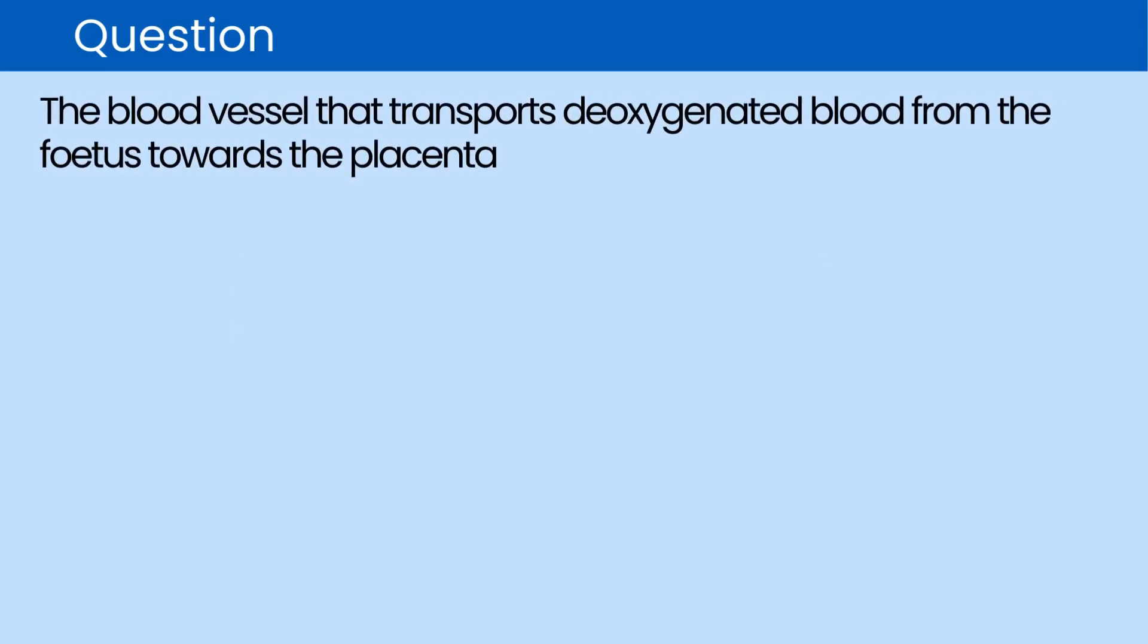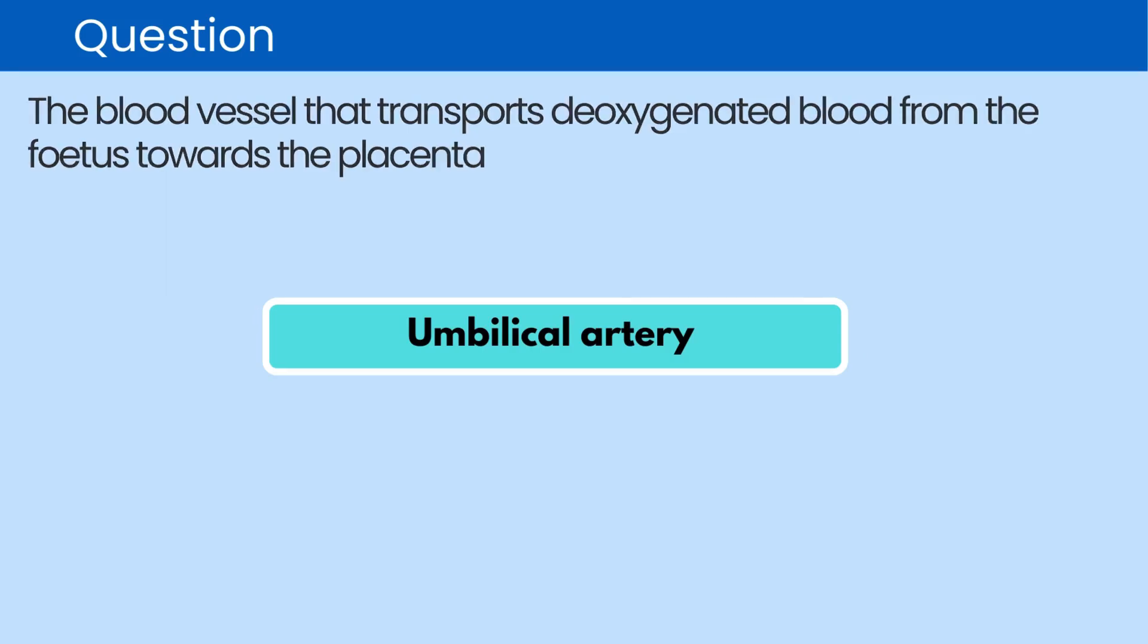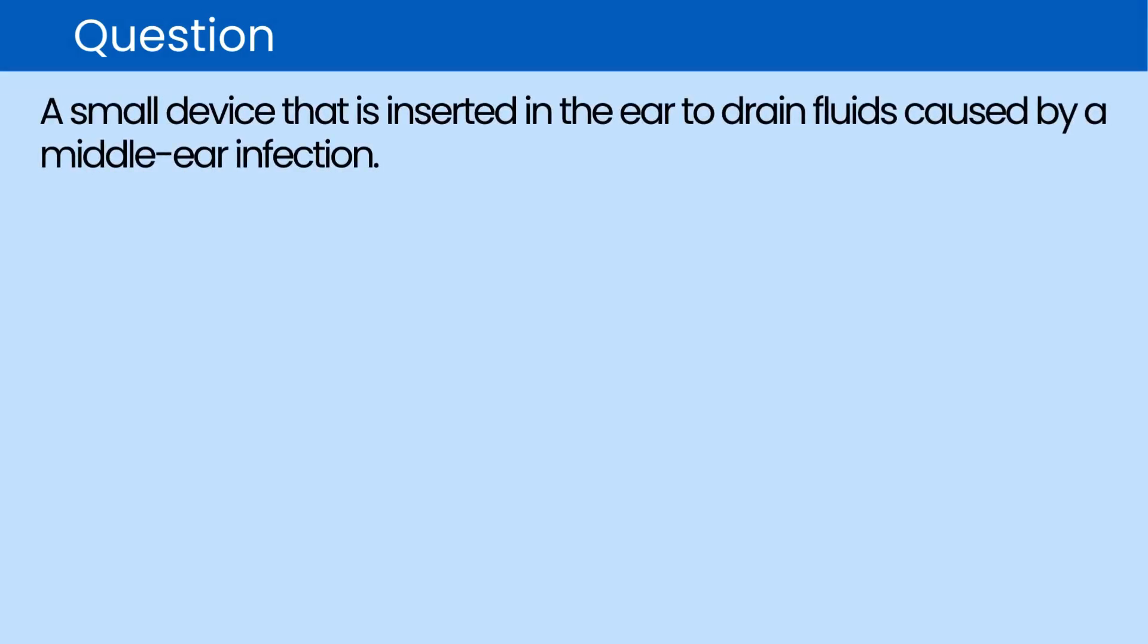Question. The blood vessel that transports deoxygenated blood from the fetus towards the placenta. The correct answer is umbilical artery. Question. A small device that is inserted in the ear to drain fluids caused by a middle ear infection. The correct answer is grommet.